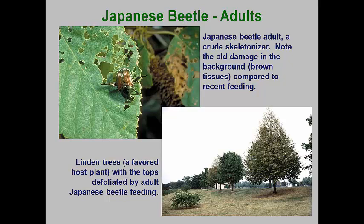Japanese beetle adults are a common crude skeletonizer of plant leaves. Notice in the upper image that the fresh skeletonization is green, but you can see some brown skeletonization in the background where the damaged tissues have turned brown. This is a good diagnostic tool to determine if a pest is still active or not, especially if you don't see any pests when you are looking.